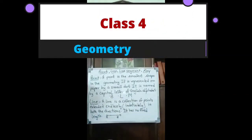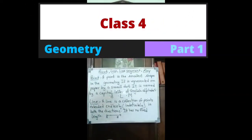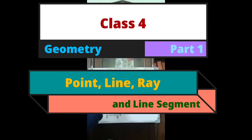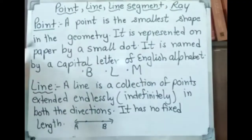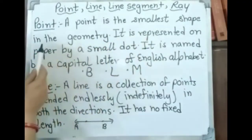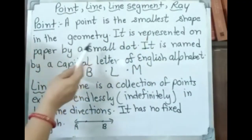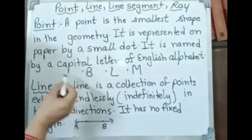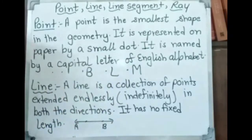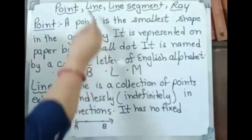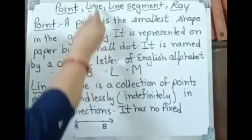Hello kids, this is your new topic: geometry. First we will discuss point, line, line segment, and ray. Point — as you all know from class 3 — a point is the smallest shape in geometry. It is represented on paper by a small dot. It is named by a capital letter of the English alphabet. This is just a small recap.